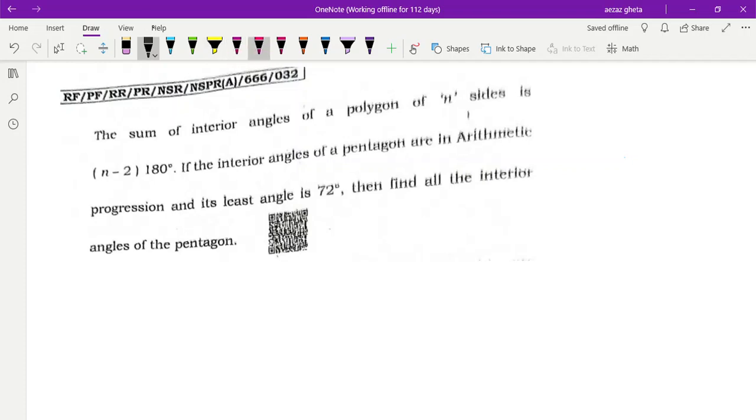Let's see. The sum of interior angles of a polygon of n number of sides. Polygon means more than three sides. Three sides is a triangle, more than three sides like quadrilateral is a polygon.